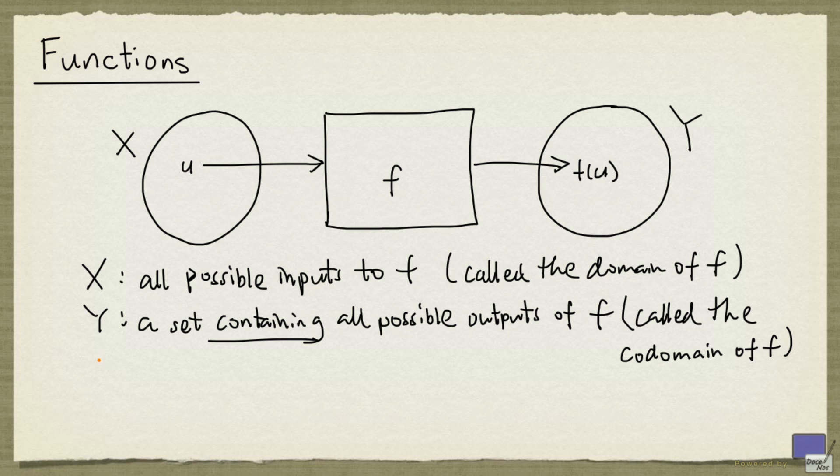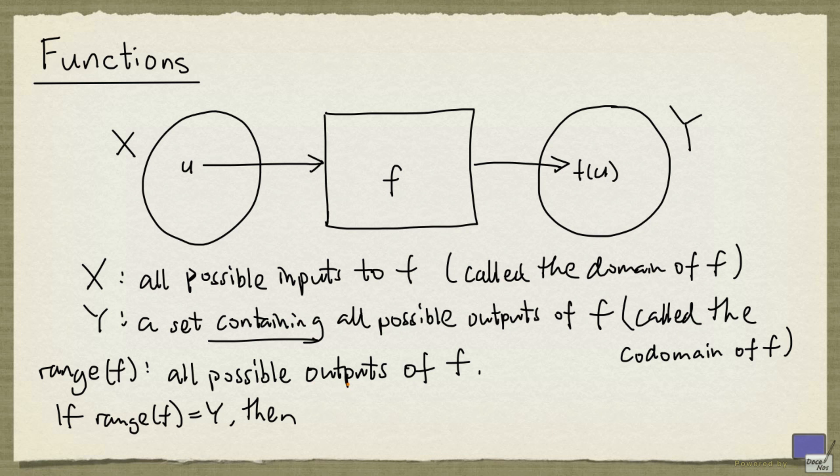Notice that we don't require Y to be exactly the set of all possible outputs of f. The set of all possible outputs of f is called the range of f. If the range of f is equal to the codomain, then f is called an onto function, or a surjective function.